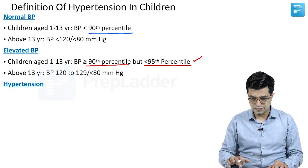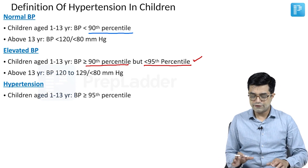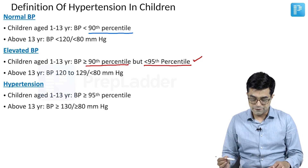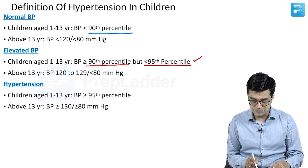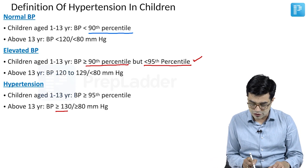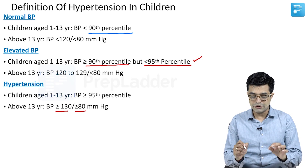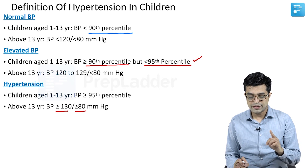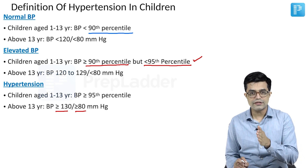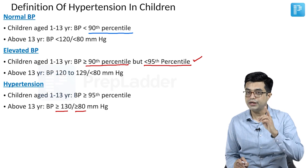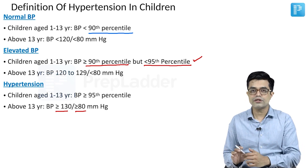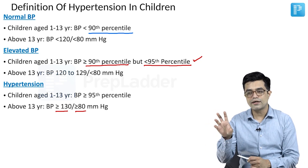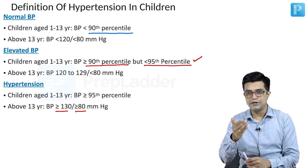When do you say hypertension? For a child aged 1 to 13 years, if the blood pressure is equal to or more than the 95th percentile, or if above 13 years of age, if the systolic BP is 130 and above or diastolic is 80 and above, then we say there is hypertension. Percentiles are used in younger children; absolute cutoffs are used for adolescents above 13 years, correlating with American Heart Association and American Cardiology Society adult guidelines.